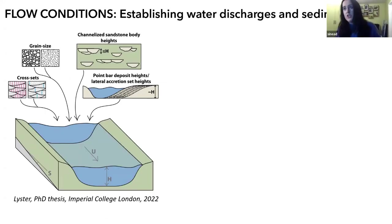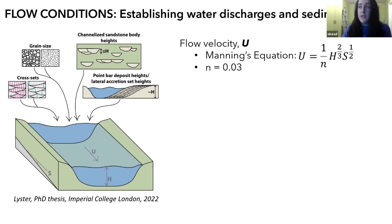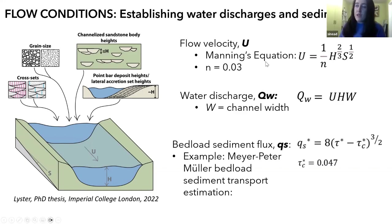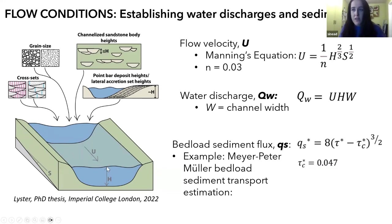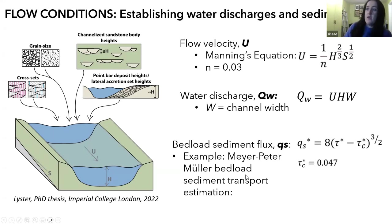Having gained insights into catchment geometries, channel geometries, and planforms, I then wanted to establish water discharges and sediment fluxes. We have good understanding of flow and sediment transport in modern rivers, with many well-established equations. For ancient systems, once we've pulled out flow depth using bar heights or estimates of cross-set thicknesses scaled up to flow depths, and established grain sizes of river beds, we can estimate slopes and then estimate flow velocity. One example is the Meyer-Peter Müller bed load sediment transport equation, though there are many others.